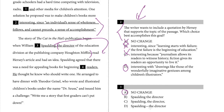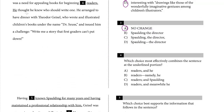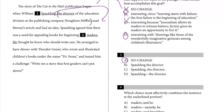Let's look at number four. 'Spalding agreed that there was a need for appealing books for beginning readers. He thought he knew who should write one.' The period followed by 'He' seems awkward — you can just connect it. Let's look at the choices.